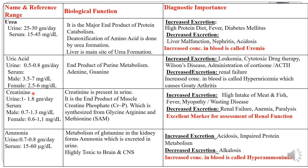Creatinine in urine is excreted around 1 to 1.8 grams per day. In serum, among males, 0.7 to 1.3 milligrams per deciliter is the normal range, whereas in females, the normal reference range is 0.6 to 1.1 milligrams per deciliter. Creatinine is the end product of muscle creatine phosphate, which is synthesized from three amino acids: glycine, arginine, and methionine — specifically S-adenosyl methionine.